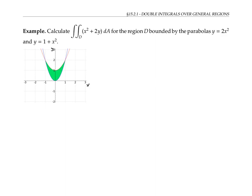Suppose we want to find the integral of the function x squared plus two y over the region D drawn below, bounded by the parabolas y equals two x squared — that's the blue curve on the bottom — and y equals one plus x squared, the red curve on the top. We can think of this integral as representing the volume between the surface z equals x squared plus two y and the xy plane above this region.